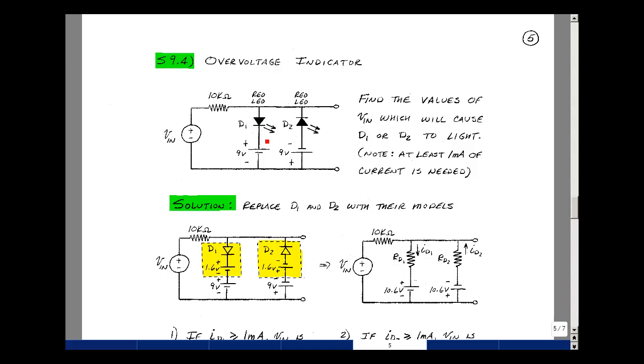Let's replace the LEDs by their model, which consists of an ideal diode and a voltage based on the color of the LED. The red LED in the class notes was about 1.6 volts. Same thing for diode 2. Put an ideal diode in, and then a battery in series with that of 1.6 volts.